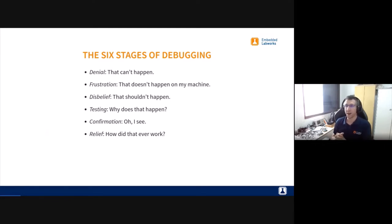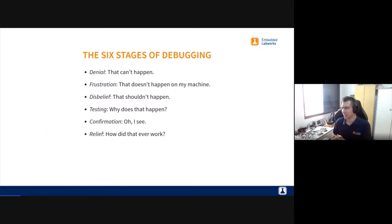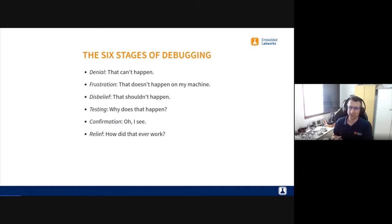It's a matter of finding those bugs. This represents the six stages of debugging. It starts from denial — you say there is no bug, I'm pretty sure I tested. Then you start realizing there might be an issue. Then you say it doesn't happen on my machine. Until you ask yourself: how did that ever work?